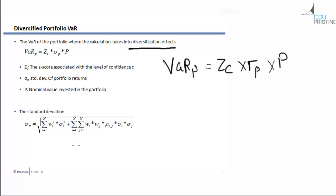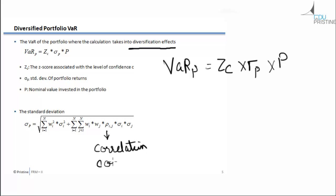The formula for Sigma_P might look complex, but we will simplify it when discussing two assets specifically. Sigma_P equals the square root of the summation of W_i squared into Sigma_i squared — representing variance of each asset — plus cross terms involving Rho_ij, which is the correlation coefficient between assets i and j, capturing the diversification effects.